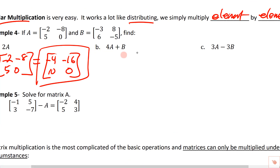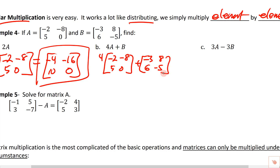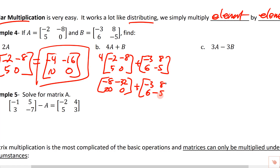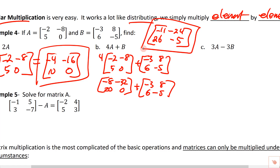Combining scalar multiplication with addition: four times A means four times each element — negative two, negative eight, five, zero — giving negative eight, negative thirty-two, twenty, and zero. Then add matrix B — negative three, eight, six, negative five. Combining element by element: negative eleven, negative twenty-four, twenty-six, and negative five.